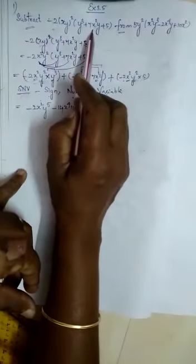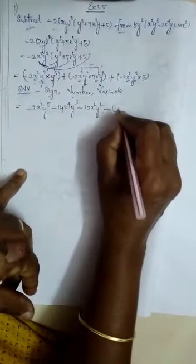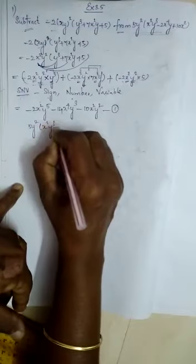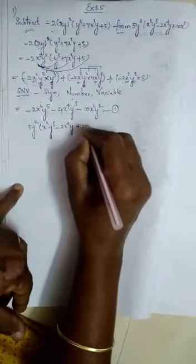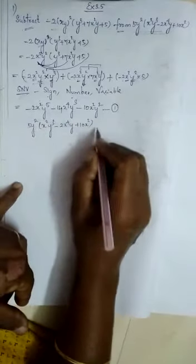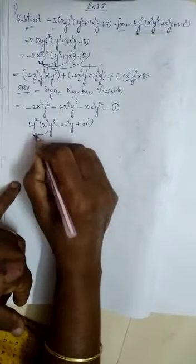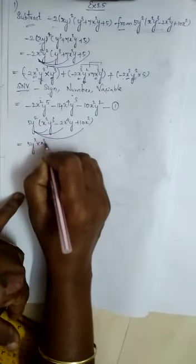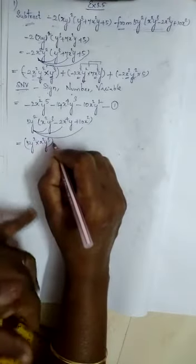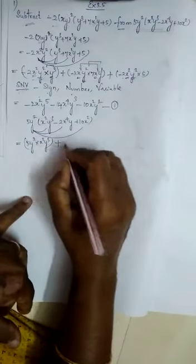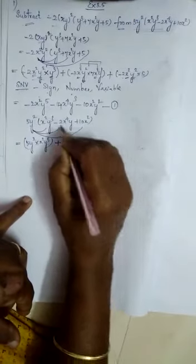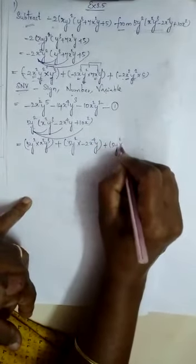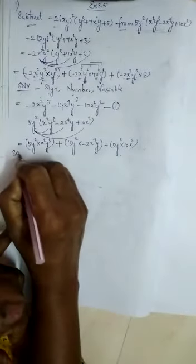The first expression is now simplified — the bracket is removed. Take it as equation 1. Now for the second expression: 5y squared into x squared y cubed minus 2x power 4 y plus 10x squared. Bracket means multiply, so remove using distributive property by drawing arcs. The first arc is 5y squared into x squared y cubed. The second arc is 5y squared into minus 2x power 4 y. The third arc is 5y squared into 10x squared.